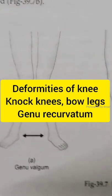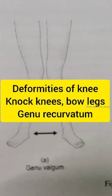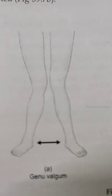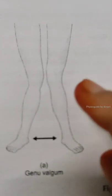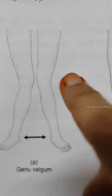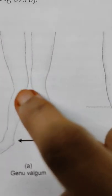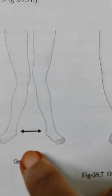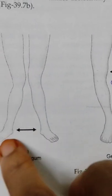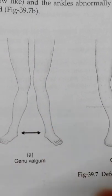Deformities of the knees. First one: knock knees, genu valgum. This is a condition where the knees are abnormally approximated and the ankles are abnormally diverted.